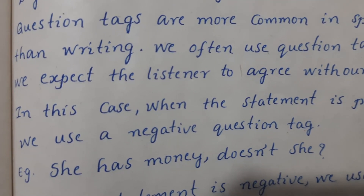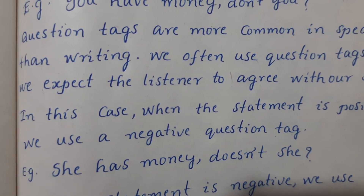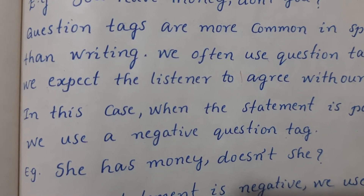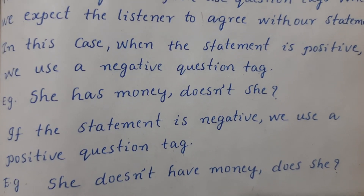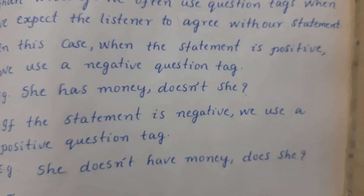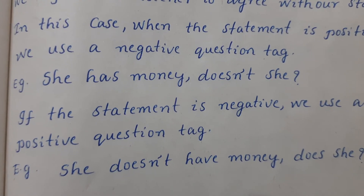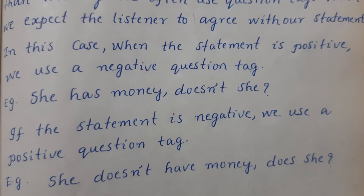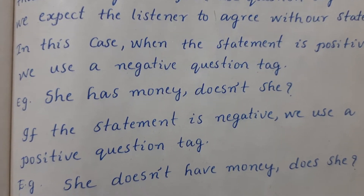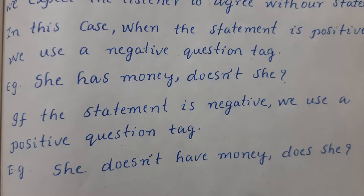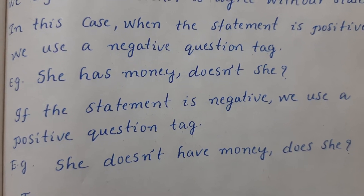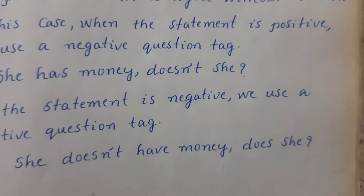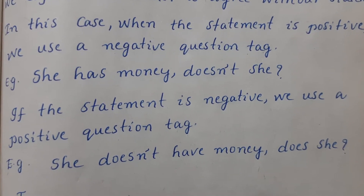'She has money' is a positive statement, so the question tag will be negative: 'She has money, doesn't she?' If the statement is negative, we use a positive question tag. For example: 'She doesn't have money' — the statement is negative — so the question tag will be positive: 'does she?'